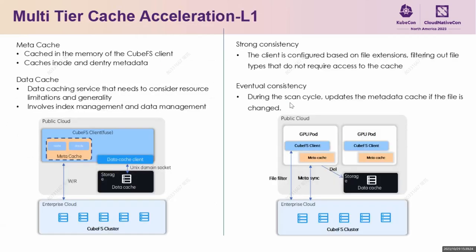The second challenge is acceleration. We have built a three-level cache. The first level cache is the computing-side cache, which uses local idle memory and disk resources of the computing node to deploy an acceleration service and cache the recently accessed data of the business. The first level cache includes two parts: memory-based metadata cache and disk-based data cache. The metadata cache includes inode cache and dentry cache, which can significantly reduce metadata query latency when clients read files. The data cache mainly caches file data blocks. The first level cache has good performance and is limited by local node storage capacity, realizing local cache acceleration of millions of metadata entries and terabytes of data.